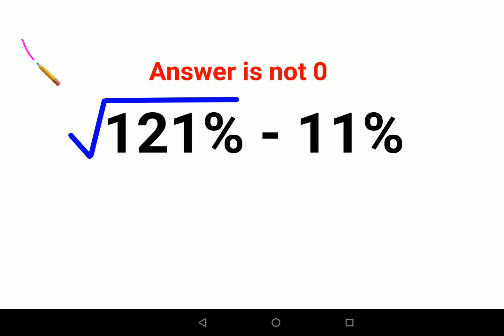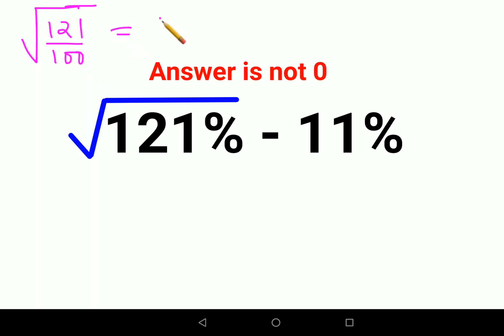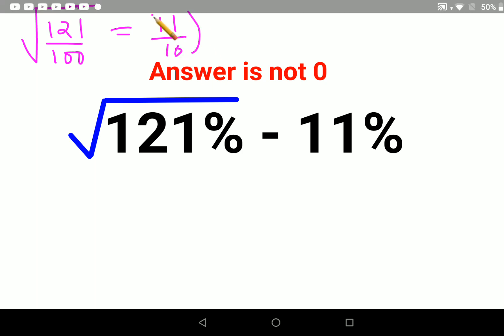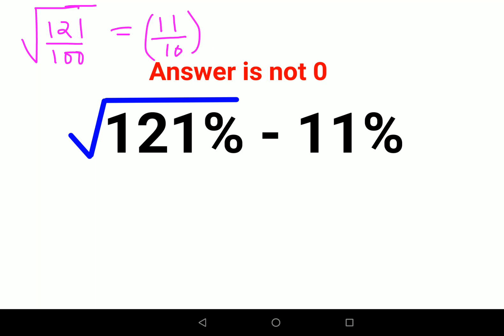We have the square root of 121%. Any number which has a percentage sign can be written as a fraction just by dividing that entire number by 100. Now this is nothing but — 121 is 11 squared and 100 is 10 squared. So I can put both of them under a square with a root.